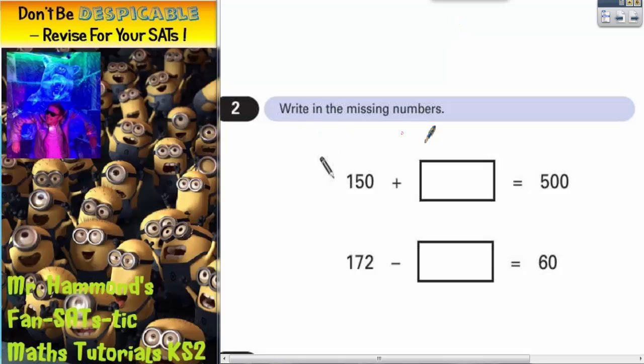Question 2. Write in the missing numbers. We've got 150 plus a mystery number equals 500, and we've got 172 subtract a mystery number equals 60.